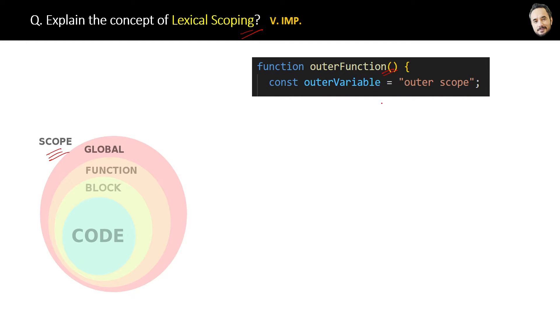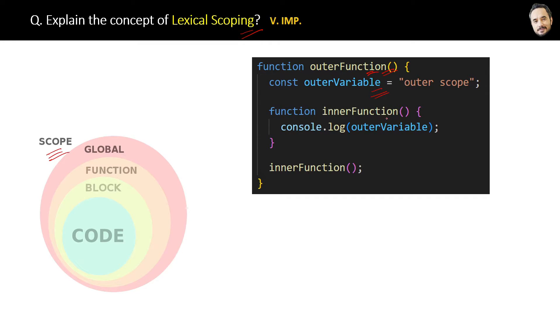Suppose we have an outer function like this, and inside that we have one outer variable. Now inside the outer function, there is also one inner or nested function like this.